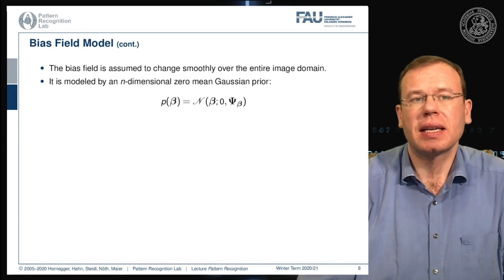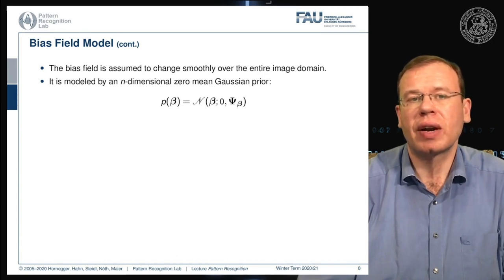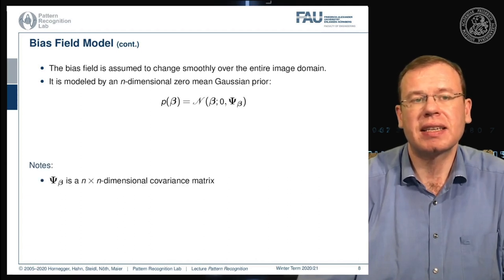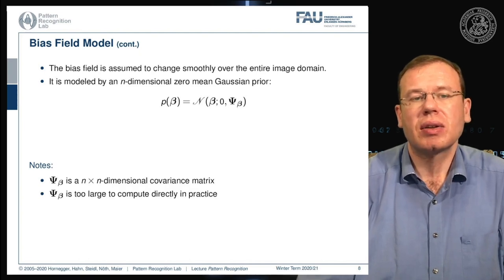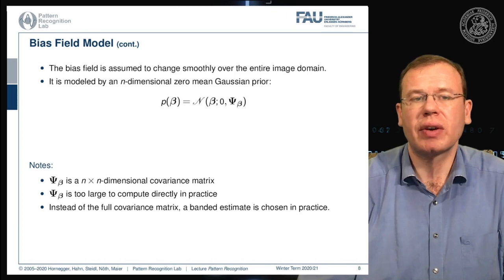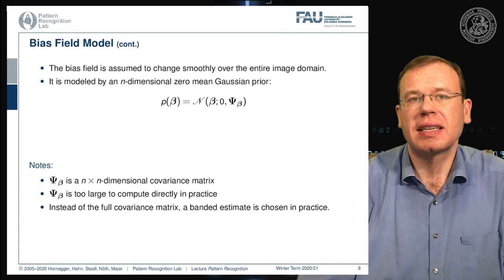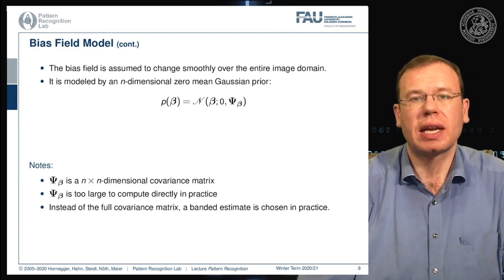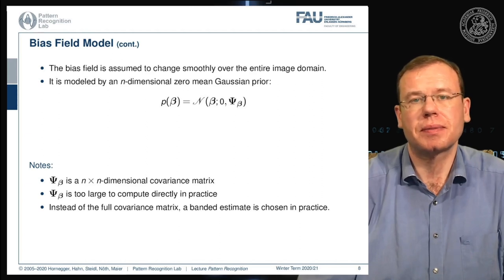The smooth bias field is modeled by an N-dimensional zero-mean Gaussian prior, where the intensities of the bias field are normally distributed with a covariance matrix of size N×N. This is typically too large to compute directly in practice, since dimensionality is squared. Instead, we use a banded estimate, assuming a pixel is correlated only with neighboring pixels while distant pixels have no relation. This encodes the smoothness constraint.